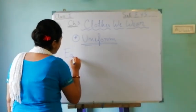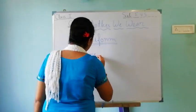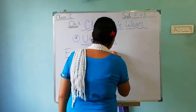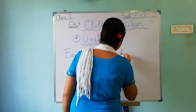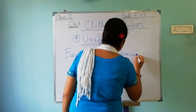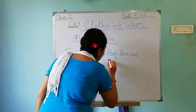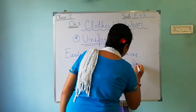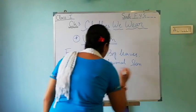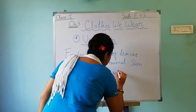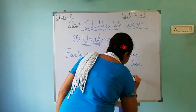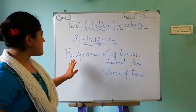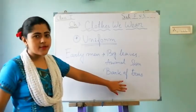So you can memorize what the early men wore: big leaves, second is animal skin, and they used the bark of trees. Those men wore these types of dresses.